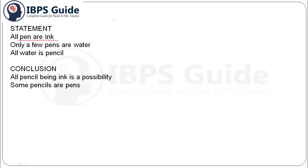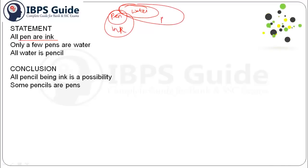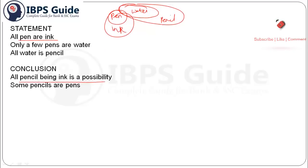Last question: 'All pen are ink', 'Only a few pen are water', 'All water are pencil.' Conclusion one: 'All pencil being ink is a possibility.' Yes, it is a possibility — although pencil shares this much portion with ink, we have no knowledge regarding the remaining portion of ink and the remaining portion of pencil. So possibility becomes true. Conclusion two: 'Some pencil are pen.' Yes, this portion of pencil are pen, so this becomes true. So here we are done with all 10 important questions.